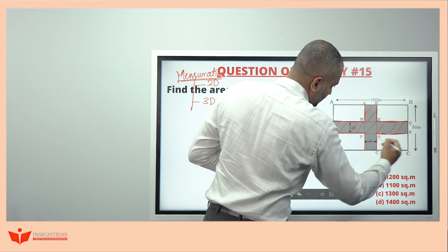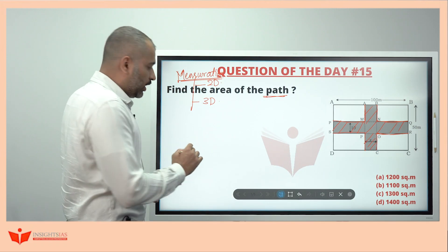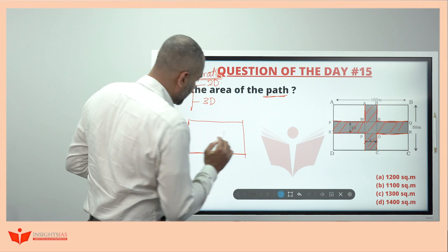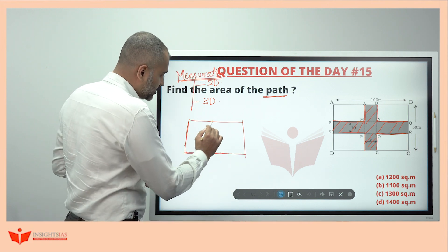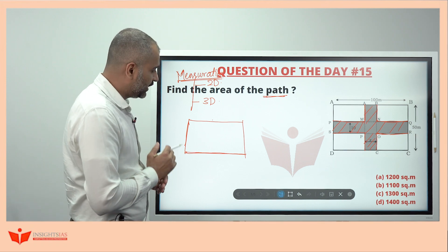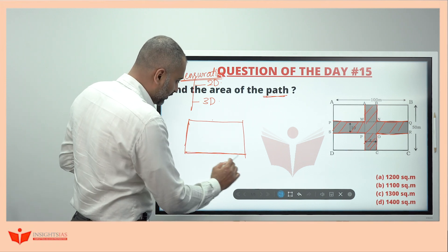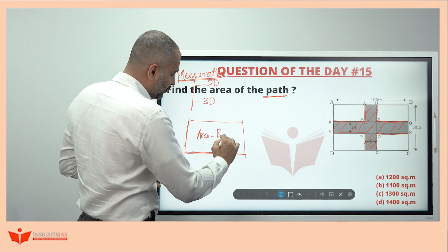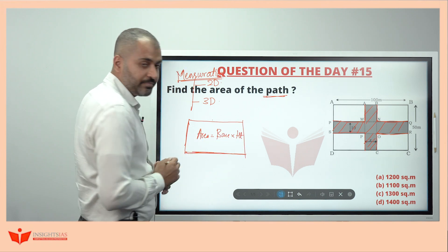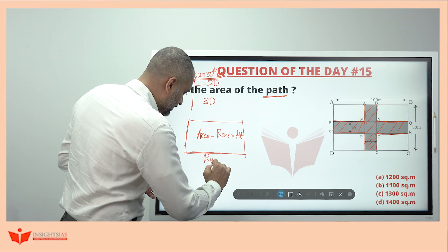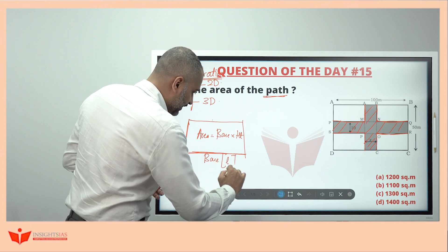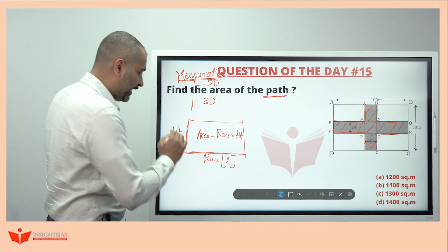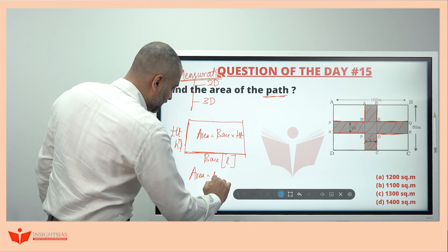A rectangle is a parallelogram. A parallelogram has two opposite sides parallel and equal. The area of any parallelogram is base into height. So the area of this rectangle becomes area = length into breadth.